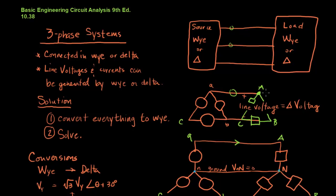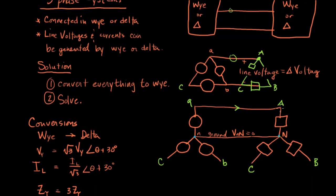It can't be, right? Because look at this node here. We have three branches coming out of the node. When I convert to a Y, I only got two. So the current across a delta load is going to change when we convert it.